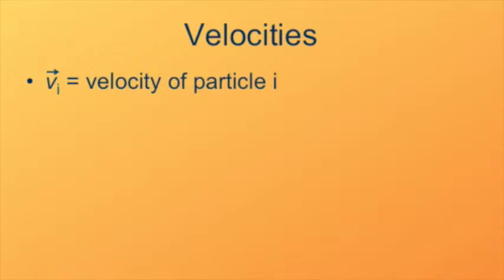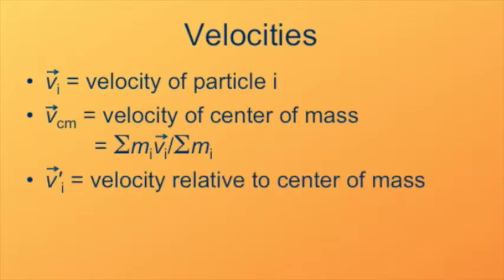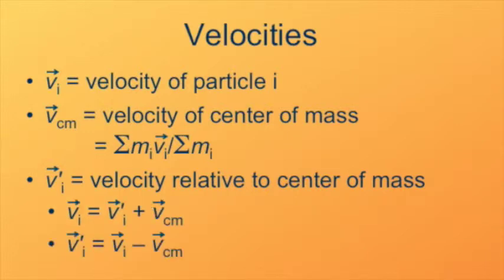We'll start by defining some different velocities. v sub i will be the velocity of the i-th particle in the reference frame of your laboratory. In that same reference frame, v sub cm is the velocity of the center of mass, defined as the sum of the individual momenta divided by the total mass. v prime is the velocity of particle i relative to that center of mass. So v sub i equals v prime sub i plus v sub cm, or equivalently, v prime sub i equals v sub i minus v sub cm.